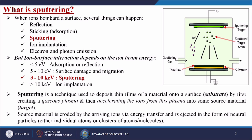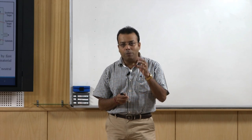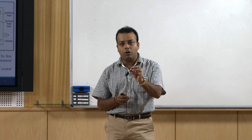Ion-surface interaction depends on the ion beam energy. We are generating a certain kind of ion energy that is hitting our sputtering target, by which the target atoms are released. If the ion energy is less than 5 electron volt, it is known as the adsorption or reflection process. If it varies from 5 to 10 electron volt, it will create surface damage and migrations. If it lies between 3 to 10 kilo electron volt, that process is known as sputtering.